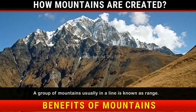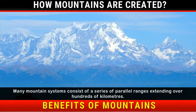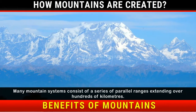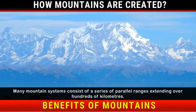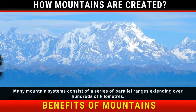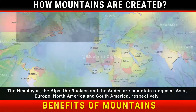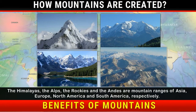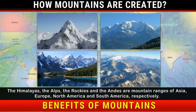A group of mountains, usually in a line, is known as a range. Many mountain systems consist of a series of parallel ranges extending over hundreds of kilometers. The Himalayas, the Alps, the Rockies, and the Andes are mountain ranges of Asia, Europe, North America, and South America respectively.